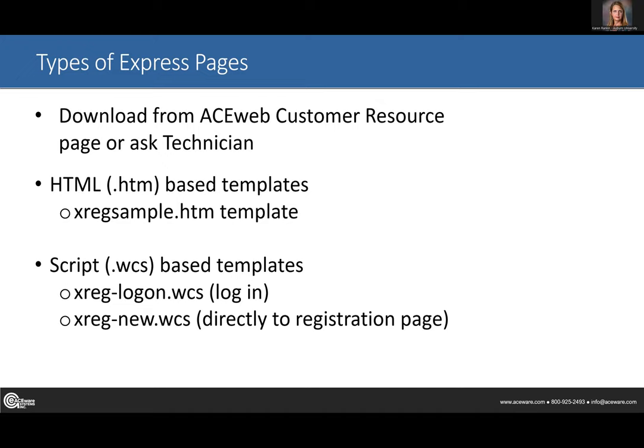How do you get an Express registration form? You simply download it from the ACE web customer resource page or ask your technician for a copy. There are two types: the HTML page, which is the one we use most of the time, and the script-based templates. I'll talk about each type of page.